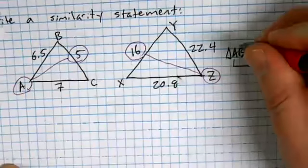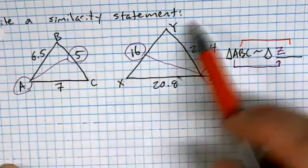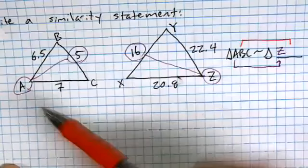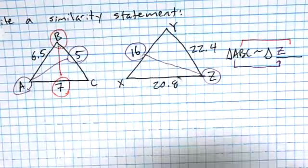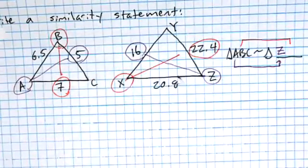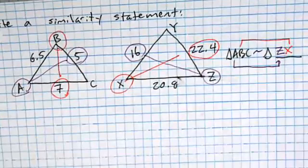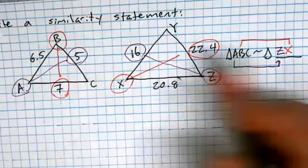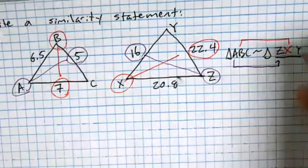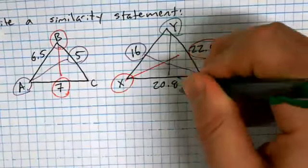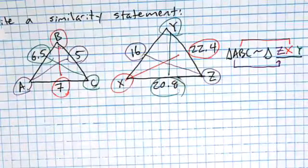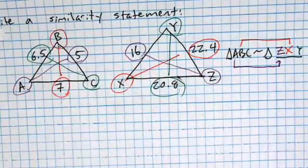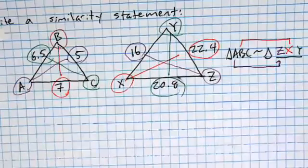B is across from seven — that's the biggest side. The biggest side in the second triangle is 22.4, which is across from X. So X matches up with B. By process of elimination, Y matches with C. We double-check: Y is across from the medium side, and C is also across from the medium side. That's the method — match by biggest, smallest, and medium.